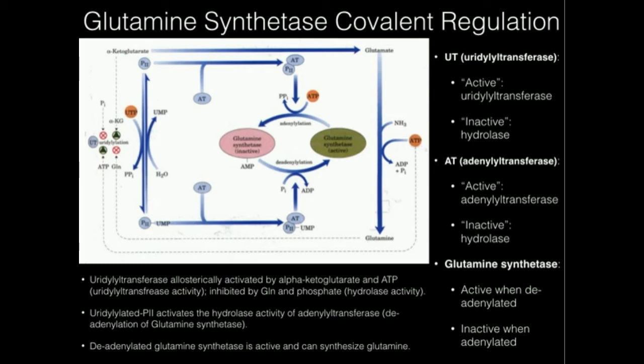But what happens if we're in a low energy state? We have a lot of phosphate and a lot of glutamine, and maybe we want to catabolize the glutamine for energy. High levels of glutamine and phosphate inhibit the uridylyltransferase, leaving P2 in the deuridylylated state. When deuridylylated P2 combines with adenylyl transferase, the enzyme acts as an adenylyl transferase and adenylates glutamine synthetase, rendering it inactive. So we don't get conversion of glutamate to glutamine; instead, glutamate is catabolized into alpha-ketoglutarate for use in the TCA cycle.